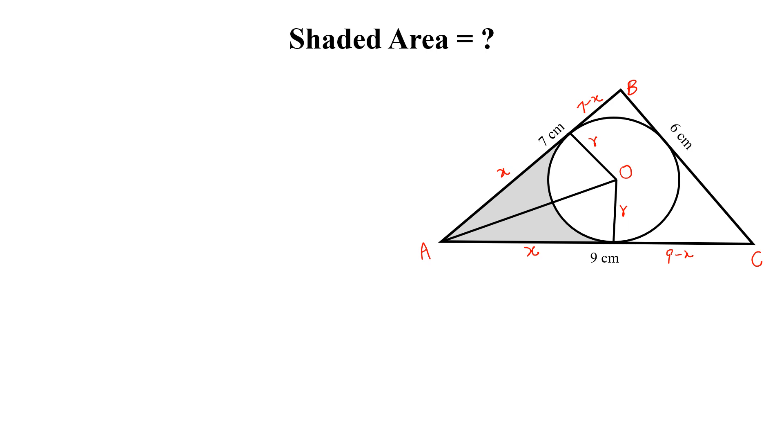Draw another radius perpendicular on BC, then this length will be also 7 minus X and this will be 9 minus X. This angle will be theta, this will be also theta because all the sides are the same length.